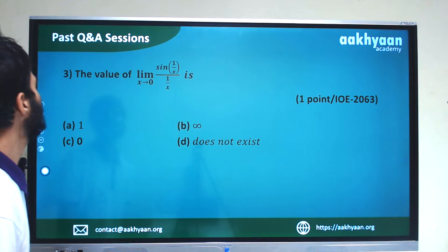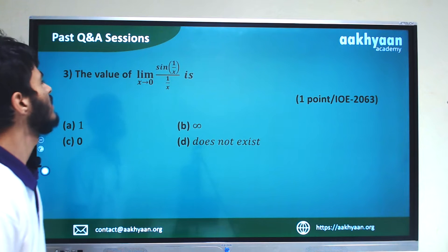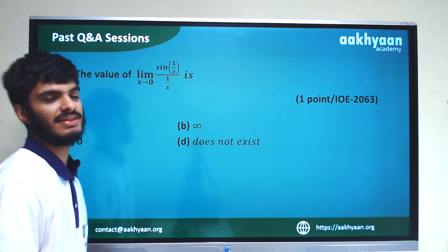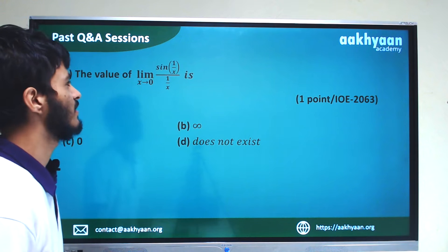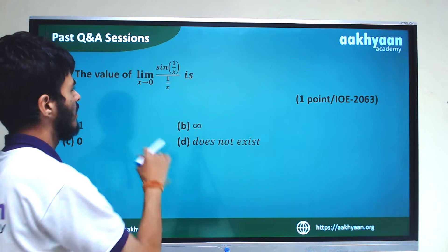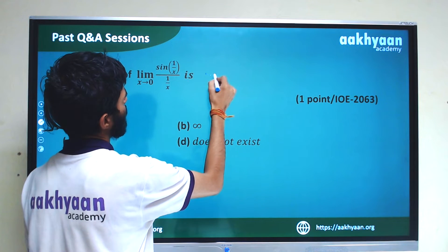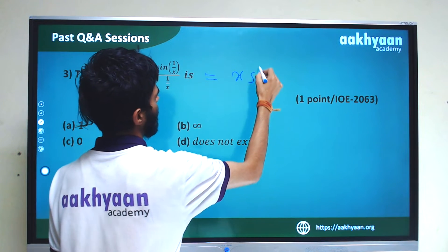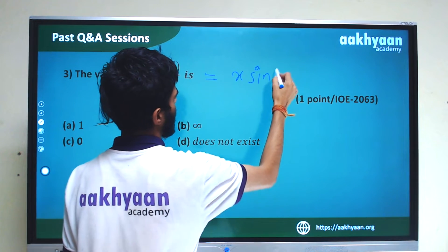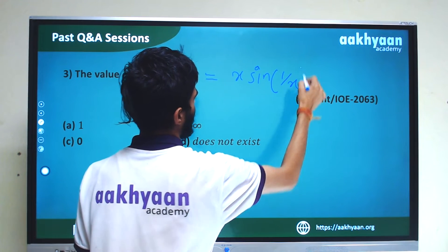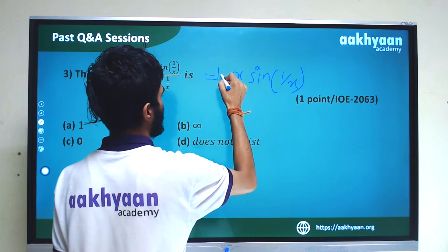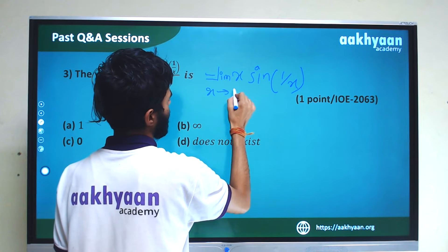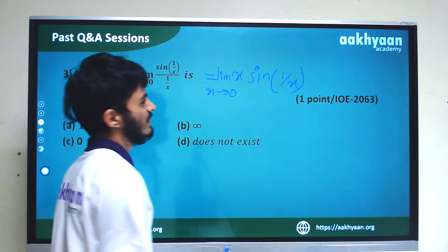We are now finding the value of limit x tends to 0 of x · sin(1/x). Here we can use the squeeze theorem concept: sin(1/x) has values between minus 1 and 1 as x goes to 0.